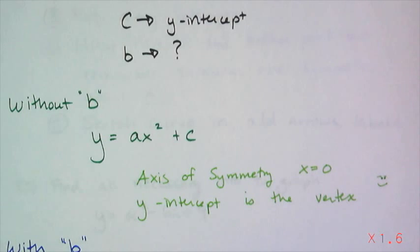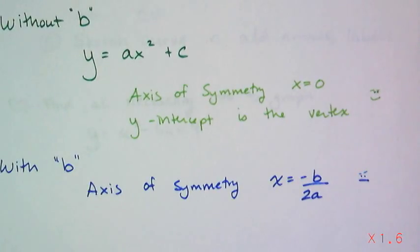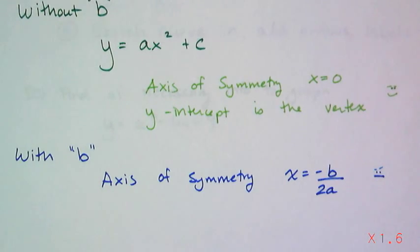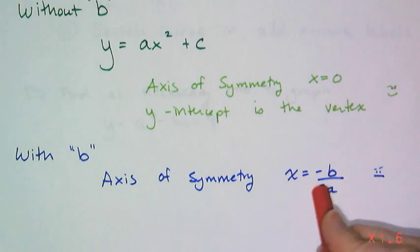Now with the b term, the line of symmetry shifts. It would be super cool if the line of symmetry were located at say x equals b or x equals negative b, but that's not the case. The axis of symmetry when a parabola has the b term, and actually when it doesn't have the b term, it's x equals the opposite of b over 2a.